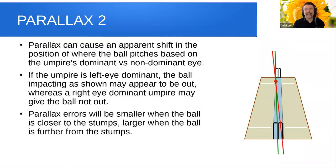Let's look at how eye dominance affects your view from the umpire's position behind the stumps. Parallax can cause an apparent shift in the position of where the ball pitches based on the umpire's dominant versus non-dominant eye. For example, if the umpire is left-eye dominant, the ball impacting as shown may appear to be out, whereas a right-eye dominant umpire might give that same delivery not out.